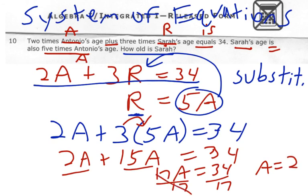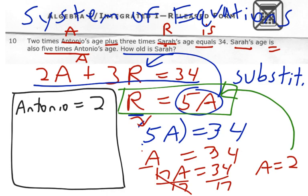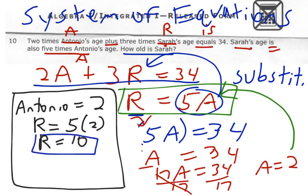So that means Antonio is 2 years old. Antonio is just a little toddler. I can definitely relate to that. So now let's look at Sarah. How can we find Sarah? Well, we have a nice relationship right here. And we already know what one of our unknowns is, so all we need to do is plug it back in. So we would get R equals 5 times A and A is 2. So 5 times 2 gives us 10. So Sarah is 10 years old. Antonio is 2 years old.